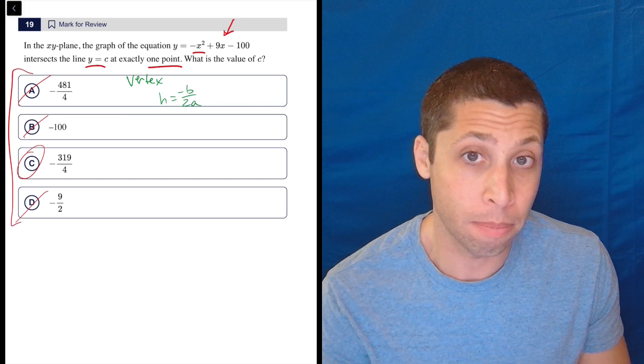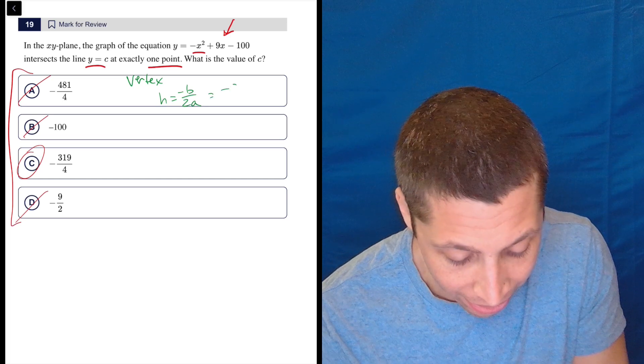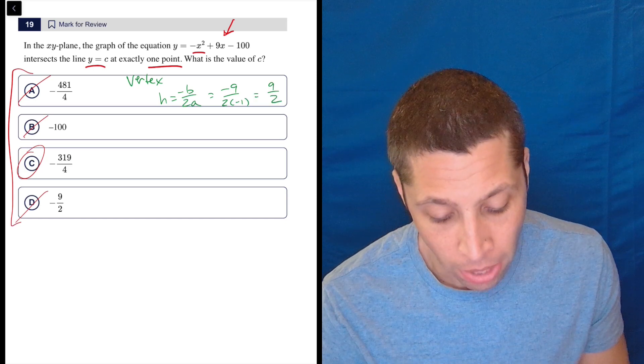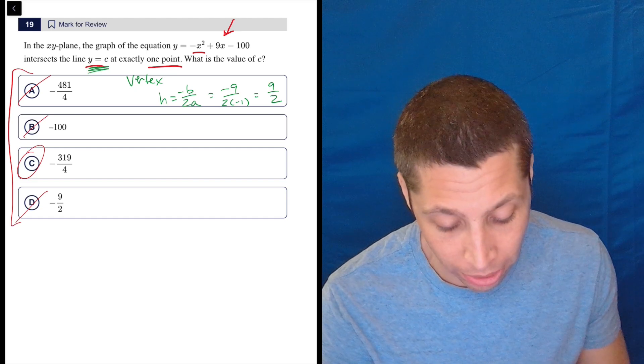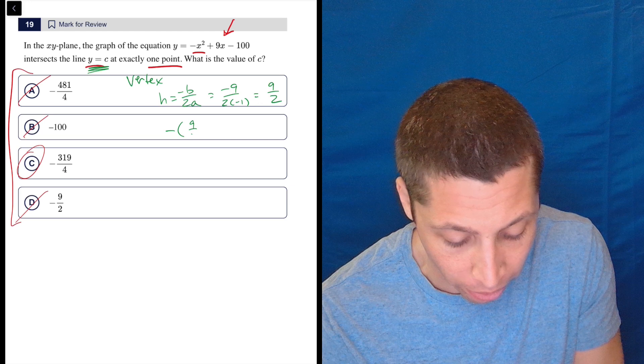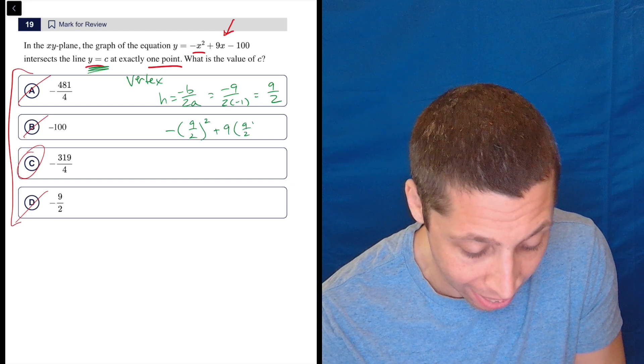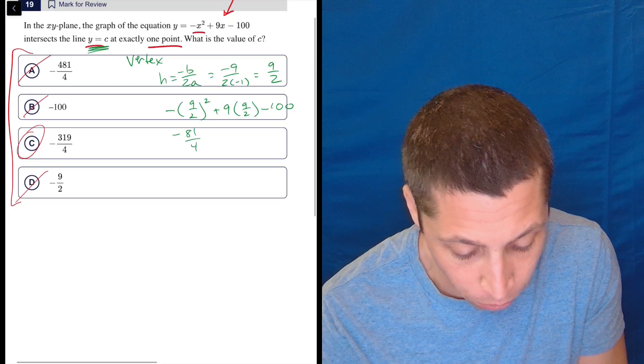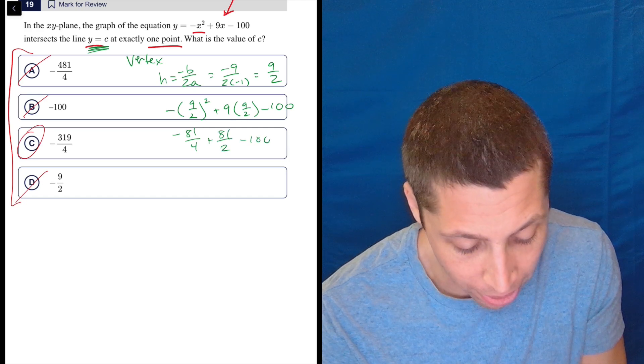So the vertex of the starting quadratic is going to be h, the x-coordinate is negative b over 2a. So that's going to be negative 9 over 2 times negative 1. So that is positive 9 halves. But we need the y-coordinate, right? Because that's what the c corresponds to. So we got to go back to the equation.